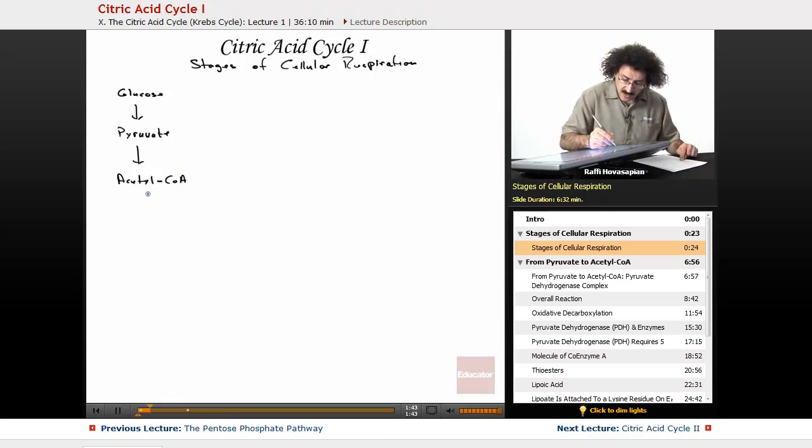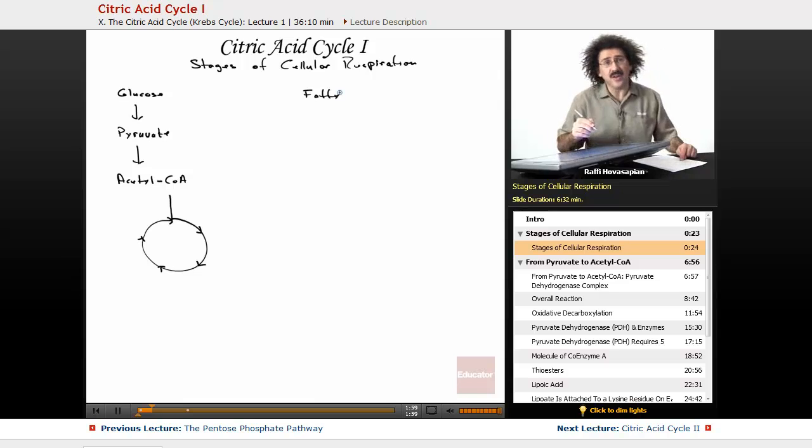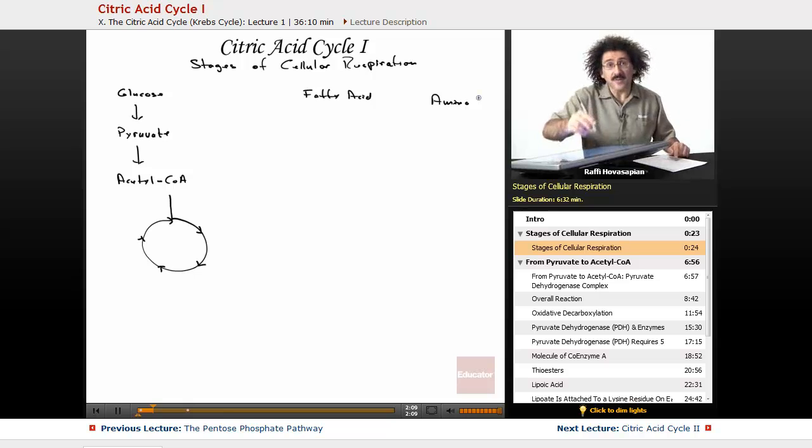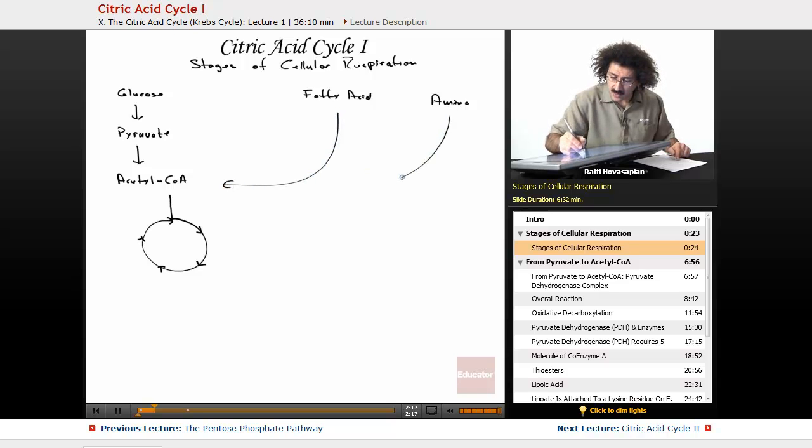From here, the acetyl-CoA actually enters the citric acid cycle. Later on, when we discuss fatty acid catabolism and amino acid catabolism, the breakdown of those things, they also end up funneling into acetyl-CoA and entering the citric acid cycle.